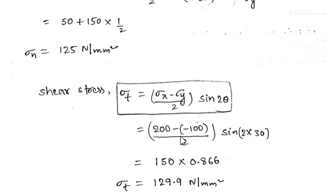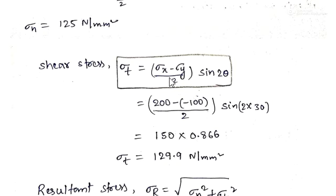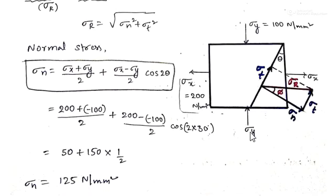The formula for shear stress on the oblique plane is: σt = (σx − σy)/2 · sin 2θ. Substituting σx = 200, σy = −100, and θ = 30 degrees: (200 − (−100))/2 · sin(2 × 30°). When we substitute and simplify, we get the tangential or shear stress on the oblique plane as 129.9 N/mm².